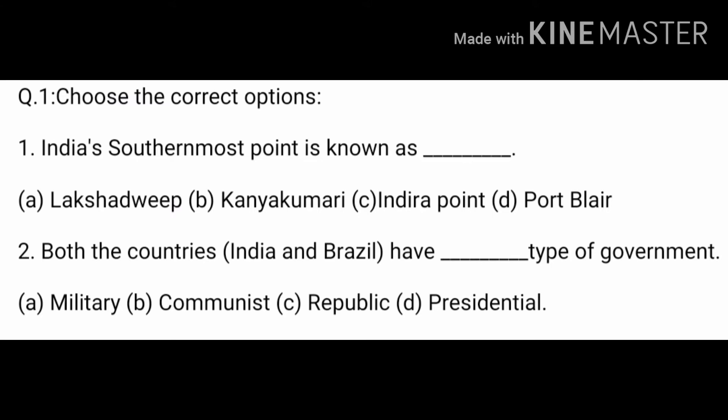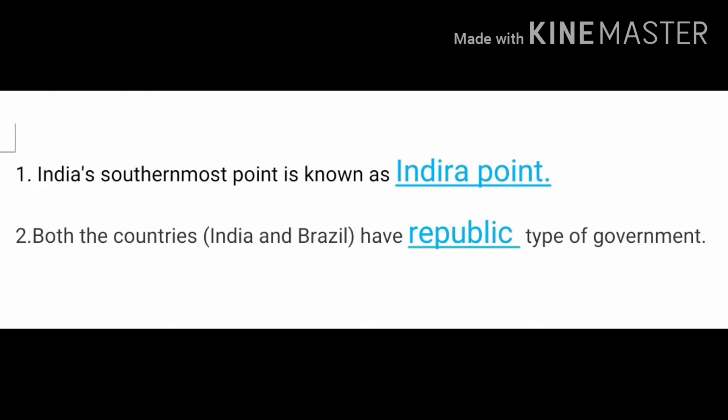Question one: India's southernmost point is known as dash. Options are Lakshadweep, Kanyakumari, Indira Point, Port Blair. Question two: Both the countries India and Brazil have dash types of government. Options are military, communist, republic, presidential.